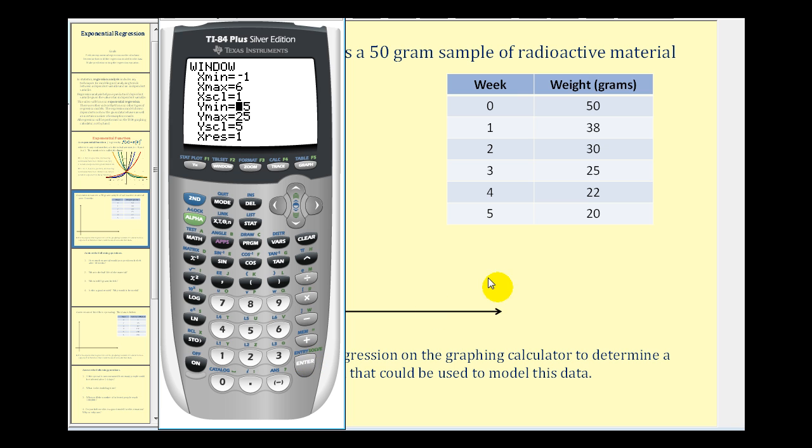And then for the y values, they go from 20 to 50. So I'll set the y min at 15 and the y max at 55. And we'll scale it by fives. Notice how the min and max values are always less than the smallest value and more than the largest value.